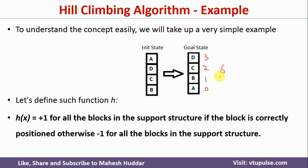Coming back to the initial state: below B there is nothing, so B's value is 0. Below C we have B, but B is not placed correctly — it should be on top of A — so we get minus 1. Below D we have two blocks, neither placed correctly, giving minus 2. Below A we have three blocks, none placed correctly, giving minus 3. The total heuristic value of the initial state is minus 6.